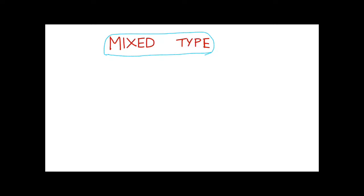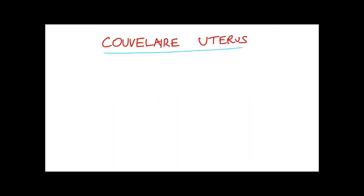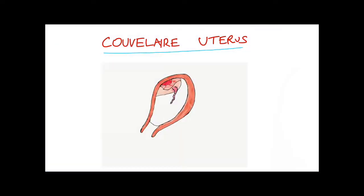The mixed type has both components — a combination of concealed and revealed type, and this is quite common. You must also know about couvelaire uterus. In concealed type of abruptio placenta, because of excessive bleeding, the blood inside the uterus seeps into the myometrium, causing black patches all over the uterus. However, this is not an indication for hysterectomy.